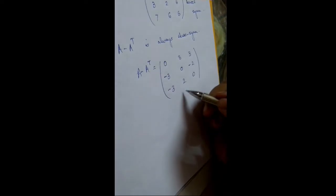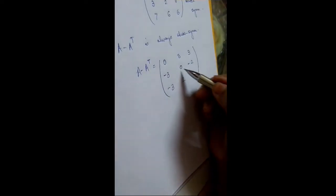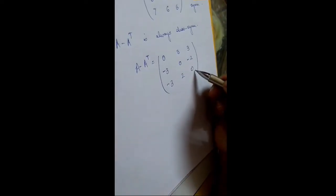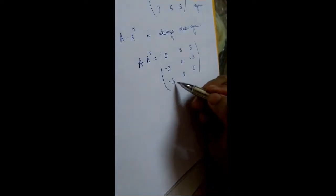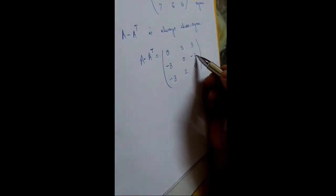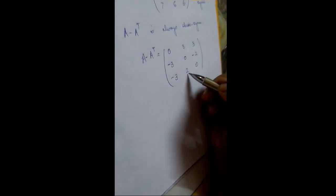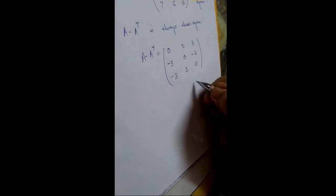Here all principal diagonal elements are equal to 0. A(1,2) is equal to minus A(2,1); A(1,3) is equal to minus A(3,1); and A(3,2) is equal to minus A(2,3). Hence skew symmetric.